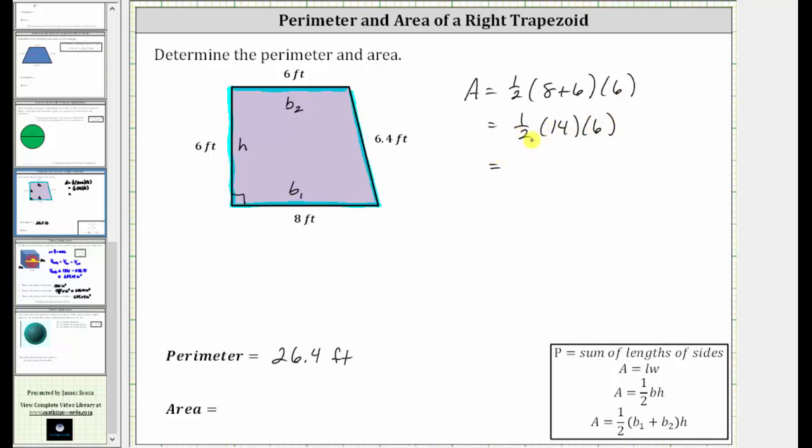Multiplying from left to right, one-half times 14 is seven, and seven times six is 42. Because the lengths are in feet, the area is in square feet or feet squared. The area of the trapezoid is 42 feet squared, which means exactly 42 square feet will fit inside the right trapezoid.